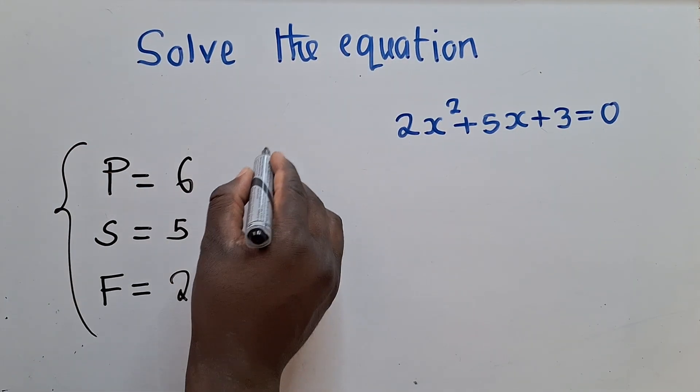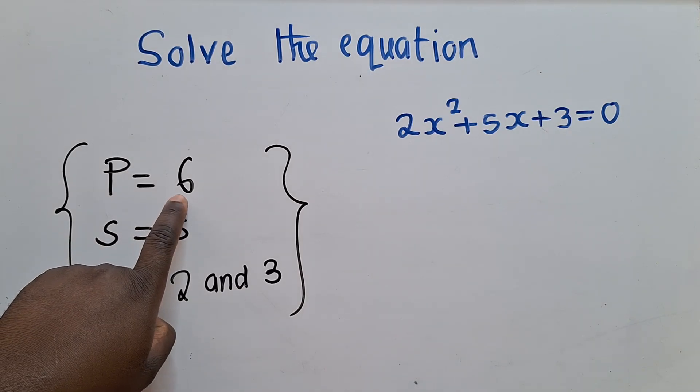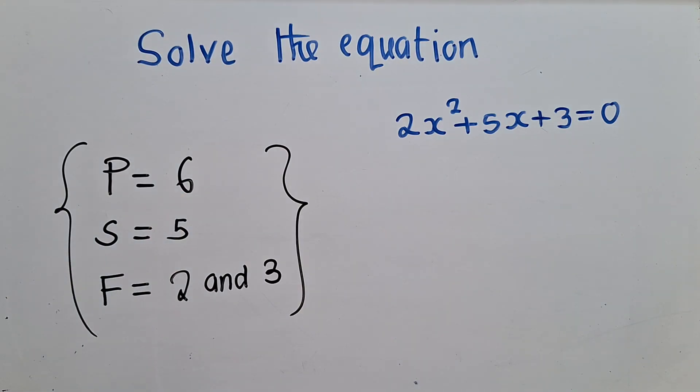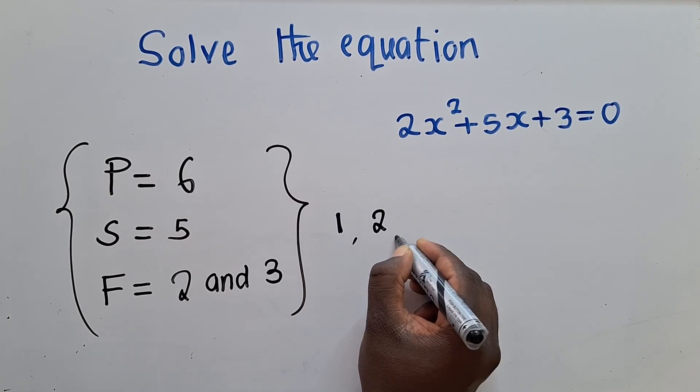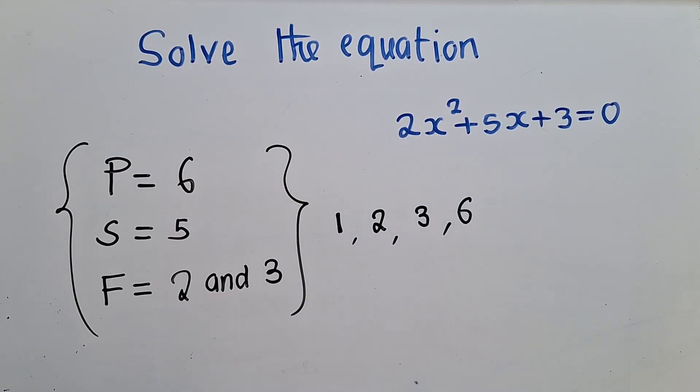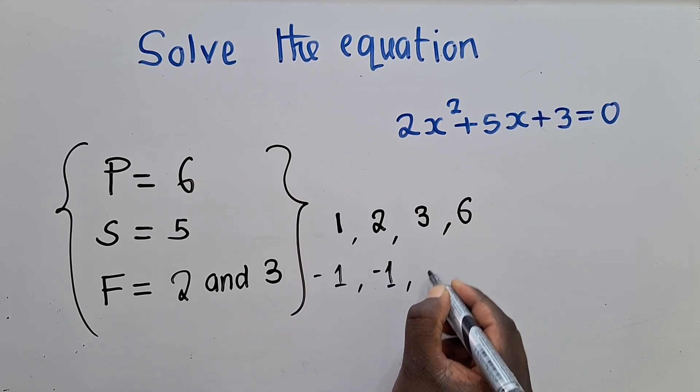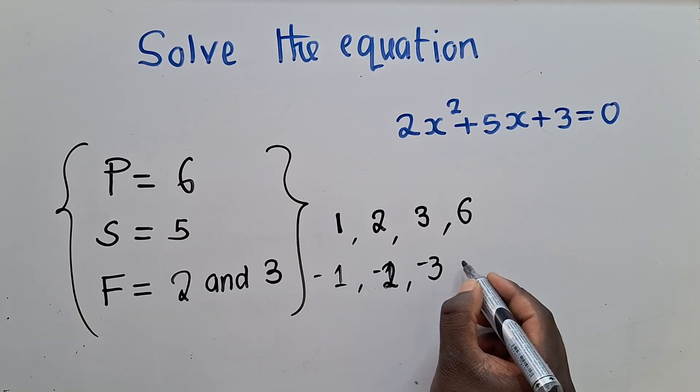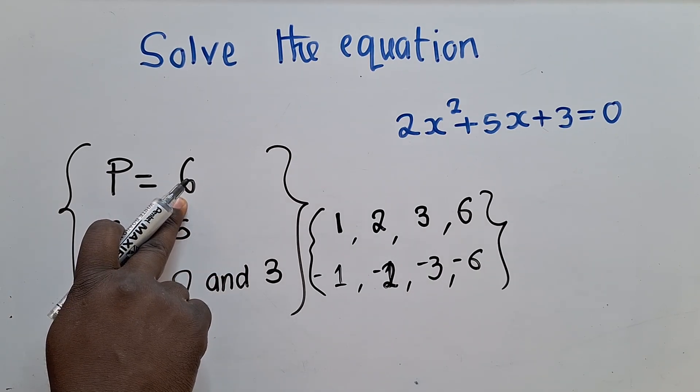So now, this is where people get a little bit stuck on how to get this. So what I encourage students or what I'm encouraging you is that always go to your product. In this case, our product is a 6. And then identify the numbers which are able to go into 6. We know that 1 is able to go into 6. What else? A 2, a 3, and a 6 itself.